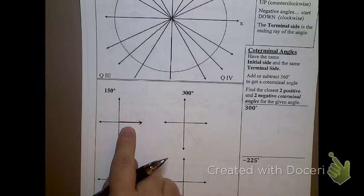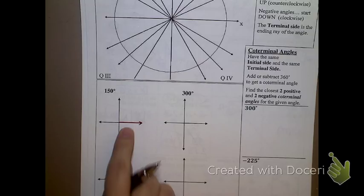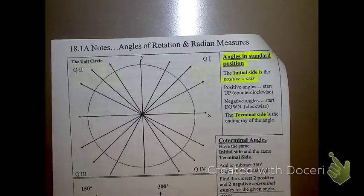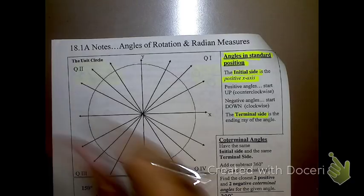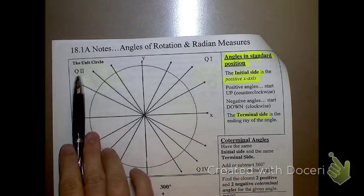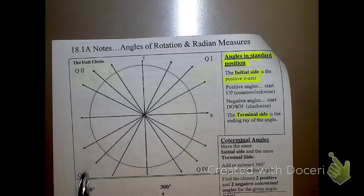Always having your initial side right here. The other side of your angle is called the terminal side. The terminal side can change — it can end up in quadrant one, quadrant two, quadrant three, or quadrant four. Hopefully, I don't have to review the quadrant numbers with you.